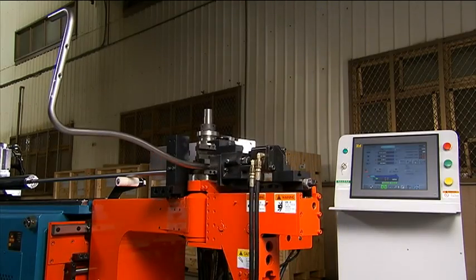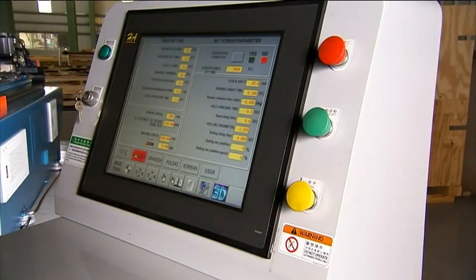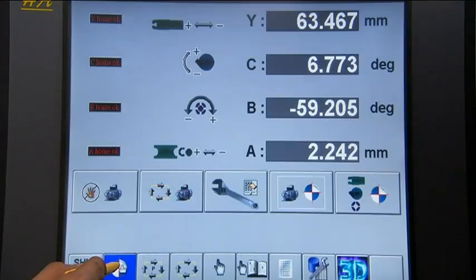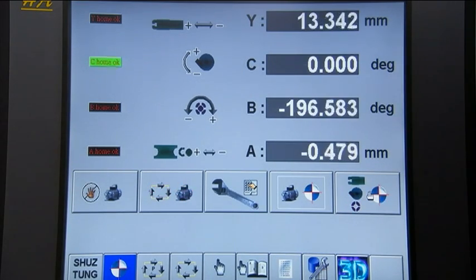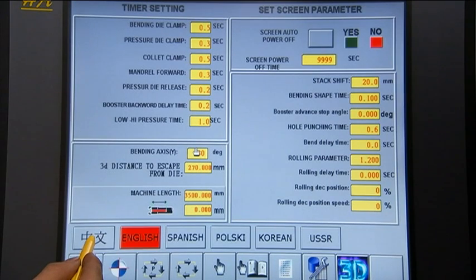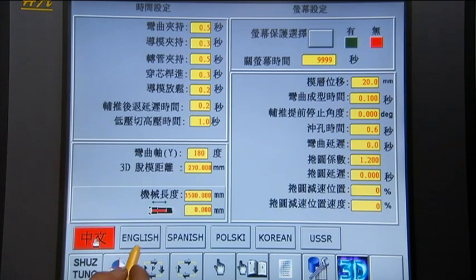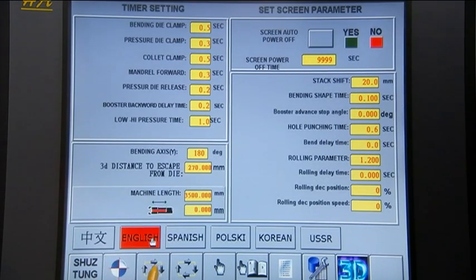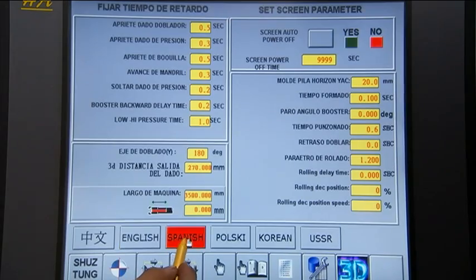This machine is controlled through an easy to read 17 inch touch screen which runs on a standard Windows XP platform and provides the operator with 4 to 6 axis machine control. Xu Dong offers multiple language options for this system dependent upon the customer's requirements.